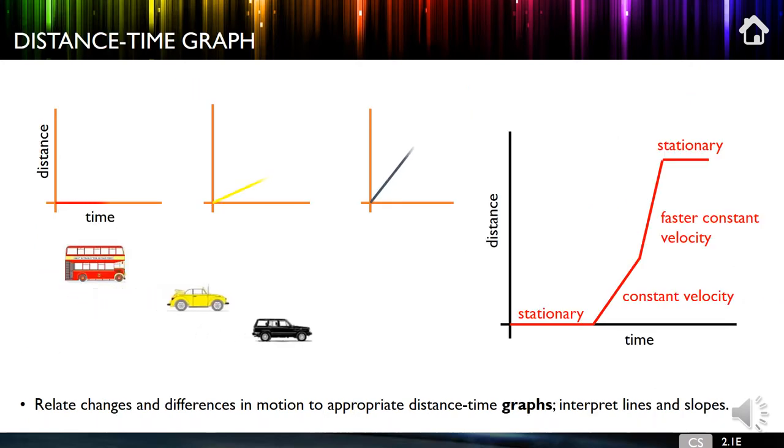Okay, so here we have the distance time graph. So we've got three vehicles here. The bus, which is not moving. So as time progresses, its distance doesn't change. The yellow beetle, which does have some speed and we can see that the line going up here and we can see a certain gradient. But the black car is, as you can see, going faster. So its distance is increasing at a greater rate. Or to put it another way, it's going faster and that's steeper. So we have the summary here. Constant velocity, faster constant velocity and stationary again at the end.